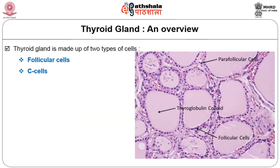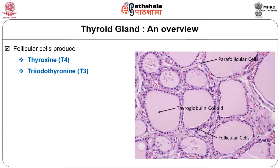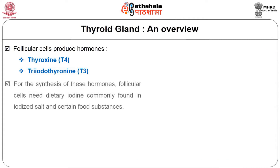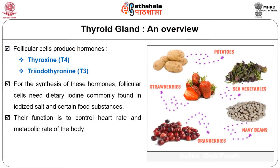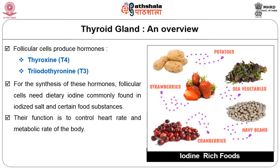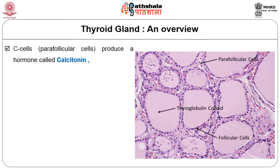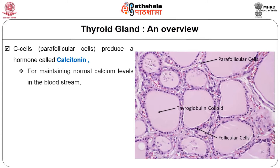The thyroid gland is made up of two types of cells called follicular cells and C cells. Other than follicular and C cells, it also contains stromal cells and immune system cells called lymphocytes. Follicular cells produce thyroxine (T4) and triiodothyronine (T3). For the synthesis of these hormones, follicular cells need dietary iodine, commonly found in iodized salt and certain food substances. Their function is to control heart rate and metabolic rate of the body.